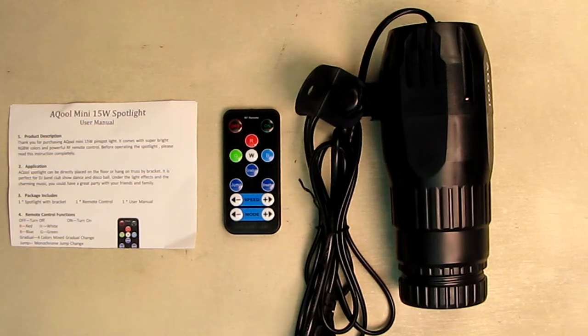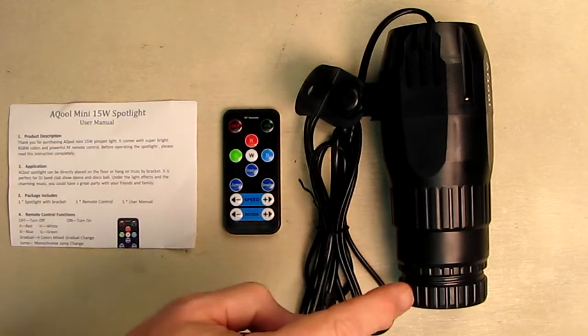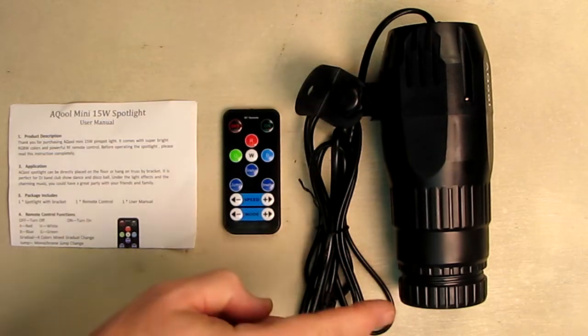You could use these in a gallery, museum, disco ball kind of thing, club, bar, dance show, weddings, birthdays, Halloween parties. The company provides a one-year warranty and 30-day money-back guarantee. There's no DMX, this is real simple to use, and you can change the distance of the size of the spot by moving it closer to the wall or further back.